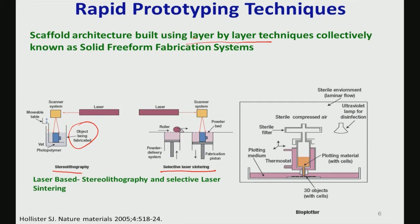In selective laser sintering, you start with a powder bed, focus your laser system on the structure, and the powder bed moves one layer at a time. It is heated, sintered, and solidified in this laser-based sintering technique.